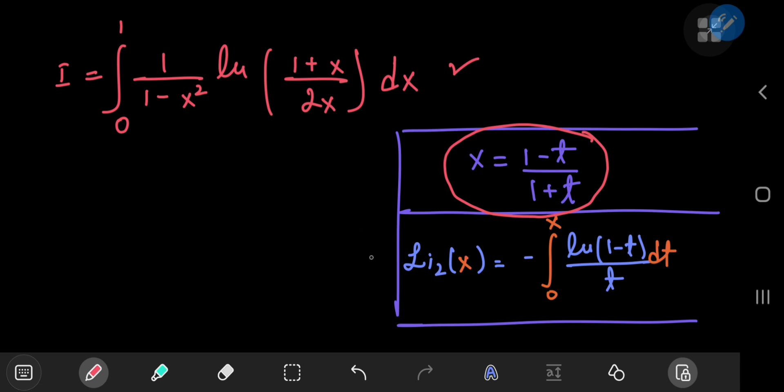Then later we're going to make use of the dilogarithm function. Now the dilogarithm of x equals the negative integral from 0 to x of the natural log of 1 minus t by t dt.